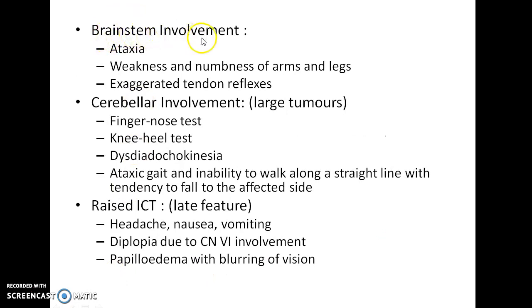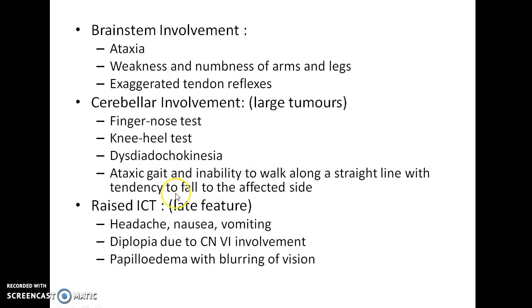Due to the involvement of the brainstem, there can be ataxia, weakness, and numbness of the arms and legs, and there will be exaggerated tendon reflexes. The cerebellum will be involved in cases of large tumours, tested by the finger-nose test and knee-heel test. There will be dysdiadochokinesia, and the patient will have an ataxic gait with a tendency to fall to the affected side.